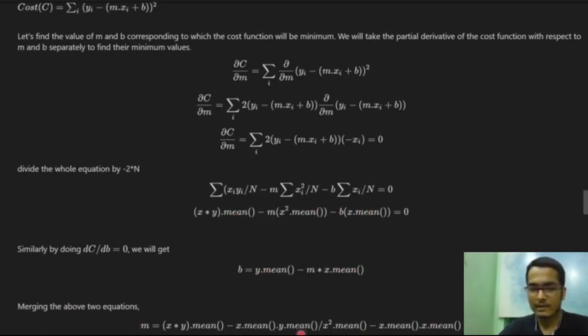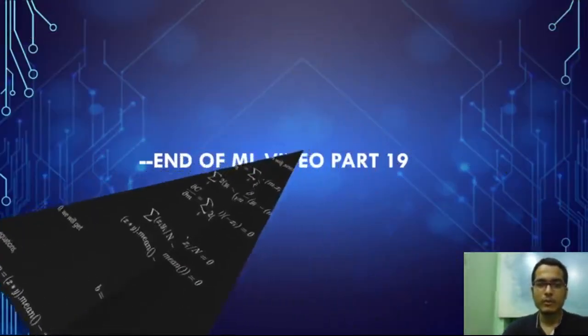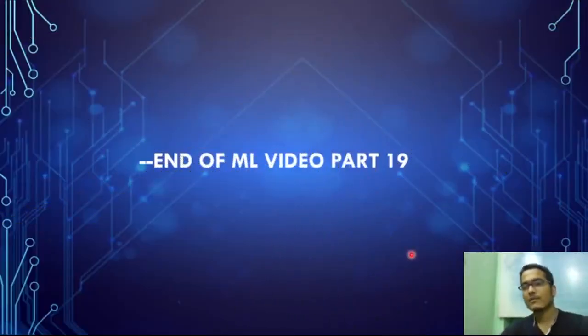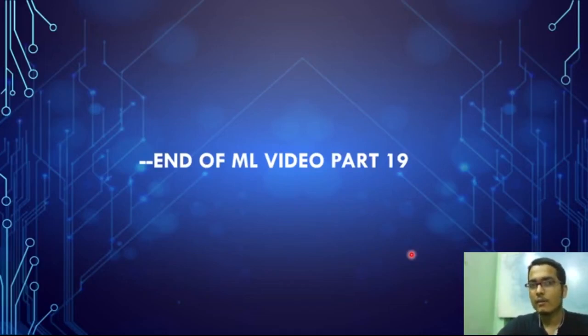This is our final result for the value of m, and b we can easily calculate from m only by putting the value of m here. So this is how basically the computer would work here. Yeah, that's all from this video. It was a short one. From the next video, we will actually implement this in Python Jupyter Notebook and we will see our application. We will basically build the first AI model in the next video. So thanks a lot.